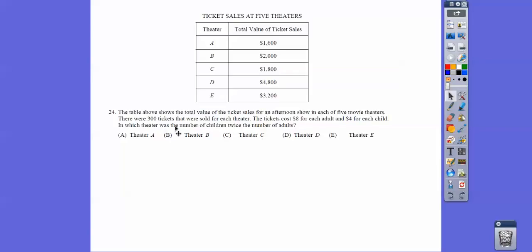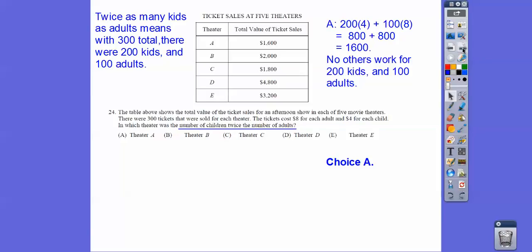Children is twice the number of adults, and since there were 300, you guys, I had to do that first. That means there's going to be 200 kids and 100 adults. See how these add up to 300, and there's twice as many as adults right here? So which one is going to come out correctly right here? They're all 300 right here. Which movie theater had twice as many kids as adults?